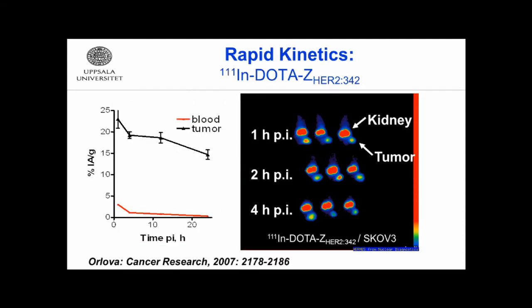We have high contrast imaging shortly after injection. Here is one of the first synthetic anti-HER2 affibody molecules. We could see that already one hour after injection, tumor-to-blood ratio exceeds five or approaches ten. One can clearly see — it's just an image taken with animals placed in a collimator on a clinical gamma camera — simultaneous imaging at different time points. One hour: high contrast, and contrast increases with time.